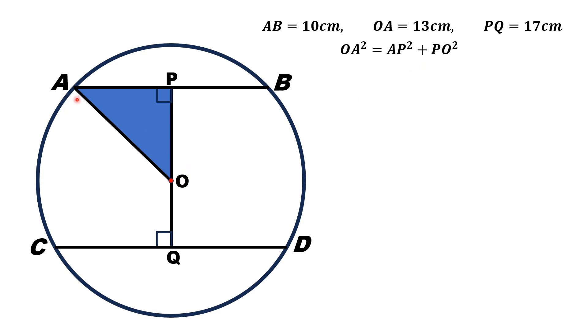OA is 13 units. What about AP? Since AB is 10 cm and OP line is the radial line, we know that the radial line is always perpendicular to the chord and divides the chord into two equal parts. So, this length AP is 5 units.